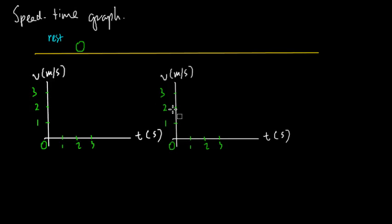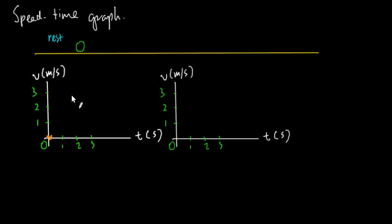Now, if it is at rest, how do we plot the graph? If it is at rest, the speed is going to be zero. At zero seconds the speed is zero meters per second, after one second it's still zero meters per second, after another second still zero, and so on. So my graph is just going to be a horizontal line on the time axis. That's simple — you can't really get a simpler graph than that.